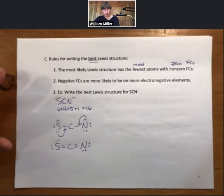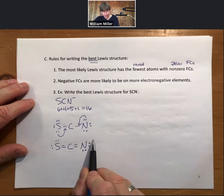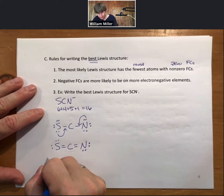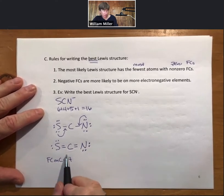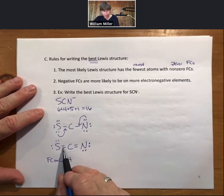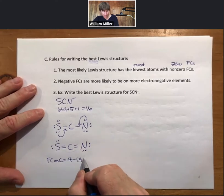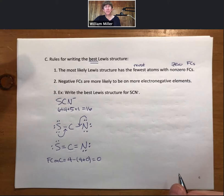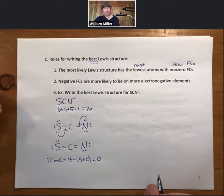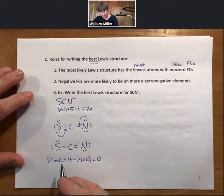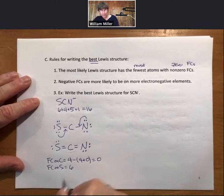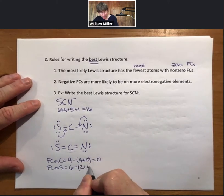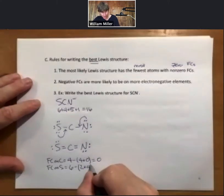We always make sure everybody has an octet first, then think about formal charge. With two double bonds, all atoms have an octet. Formal charge on carbon: four valence electrons, four bonds, zero unshared electrons — formal charge zero. Any time you see carbon with four bonds, formal charge is zero. For sulfur: six valence electrons from the periodic table, two bonds, four unshared electrons — formal charge zero.